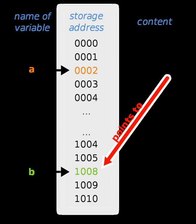In object-oriented programming, pointers to functions are used for binding methods, often using what are called virtual method tables. A pointer is a simple, more concrete implementation of the more abstract reference data type.